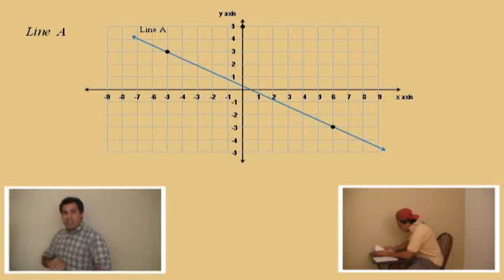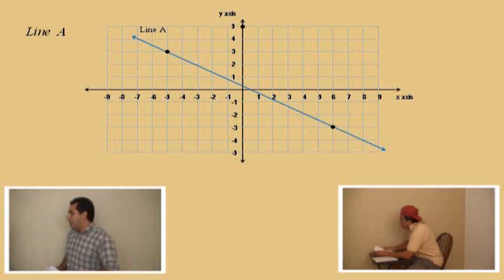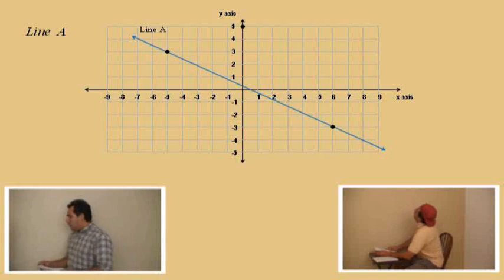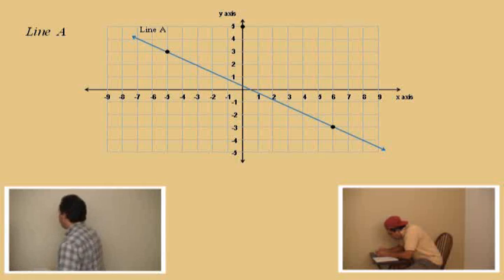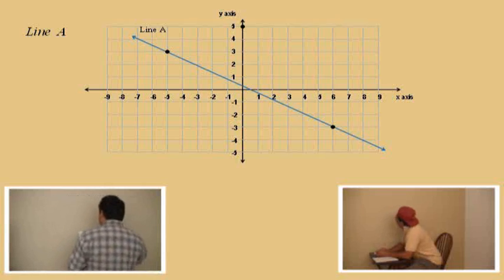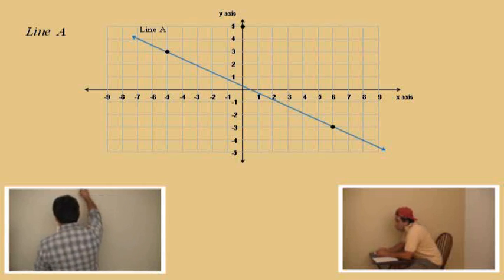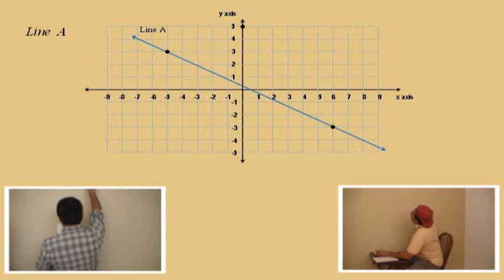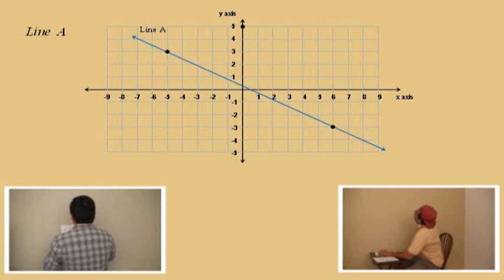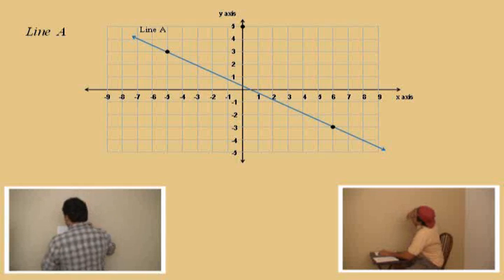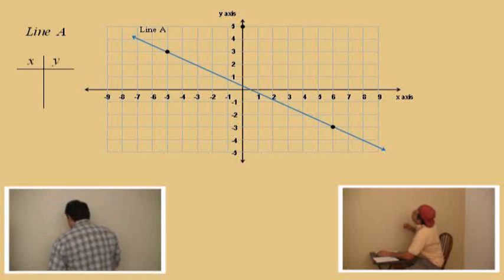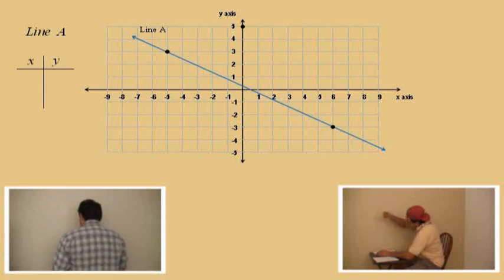Okay, there is a picture of our line right there. What we're going to do here is pick some points. There are two points on that line, indicated by those black dots up there. What we're going to do first is make a little table here, our X and Y table, and we're going to get some ordered pairs.